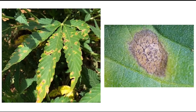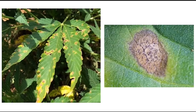Seeing these black specks coupled with a yellow halo is a very strong indication of septoria leaf spot. This can help you identify this disease in the field.